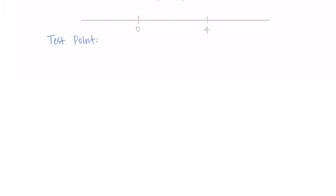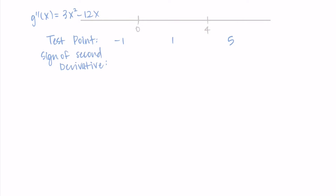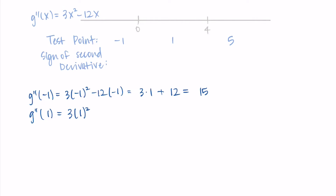I put the inflection points on a number line and choose a test point in each interval, then check the sign of the second derivative at each. I'm choosing x = −1, x = 1, and x = 5. You can choose whatever points you want that fall in those intervals. Plug each into the second derivative — we're looking for whether it's positive or negative, which tells us concave up or concave down.